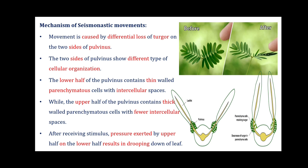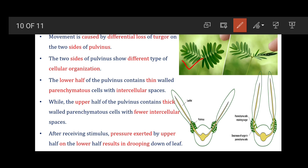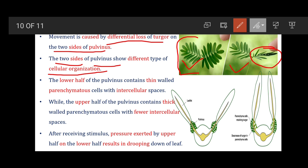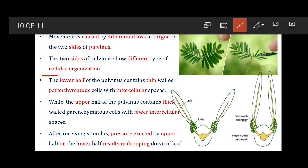In Mimosa pudica, when any tip of the leaflet is touched, the leaflets start dropping down due to conduction of movement toward different parts of the pinnules. The mechanism involves the before-and-after structure of the pulvinus: the two sides of the pulvinus show different cellular organization, causing differential loss of turgor on the two sides. This differential cellular organization and differential loss of turgor on both sides of the pulvinus is the reason for seismonastic movement.